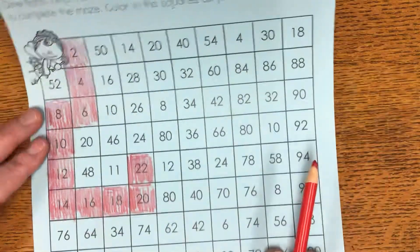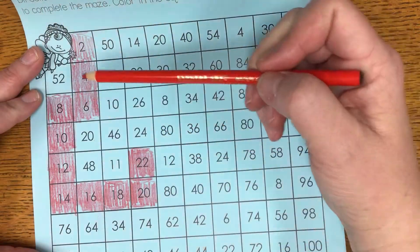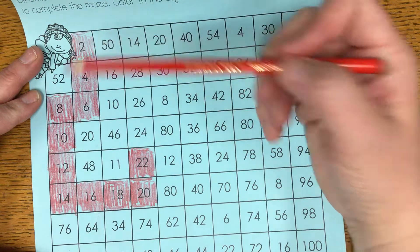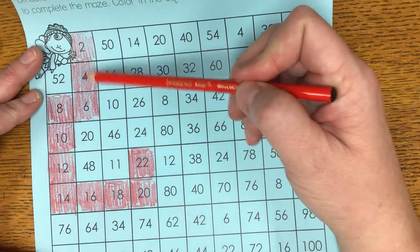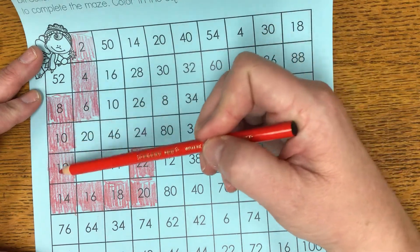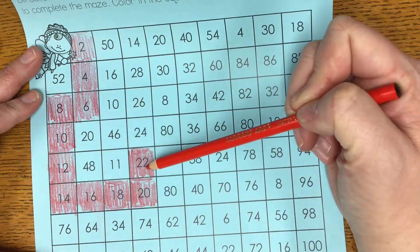So right now, if I go back and count, I can count it and it will tell me if I have the pattern. Two, four, six, eight, ten, twelve, fourteen, sixteen, eighteen, twenty, twenty-two.